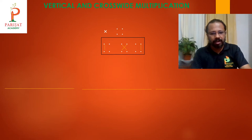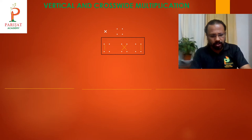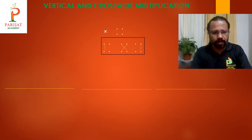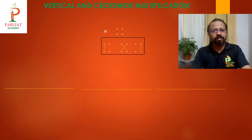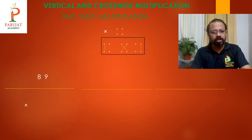Make three columns of two dots by two dots. In the last column, you have to connect the last two dots. In the middle column, you cross-connect all dots. In the first column, you connect the first two dots. First, draw this figure in your notebook, then we will go with some multiplications.